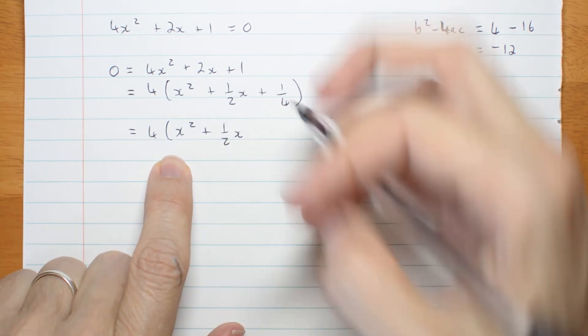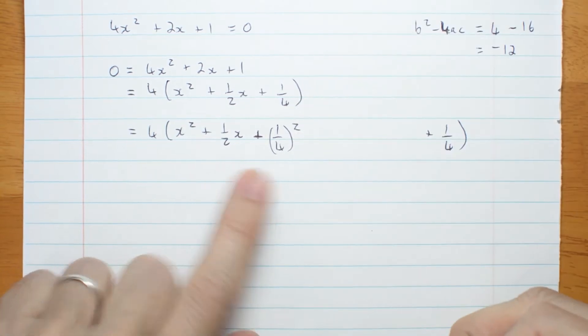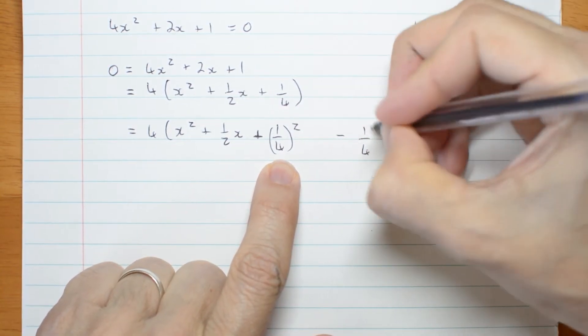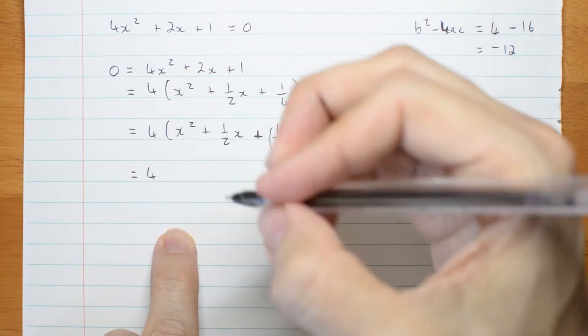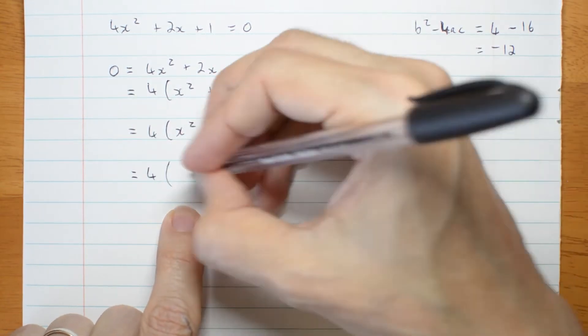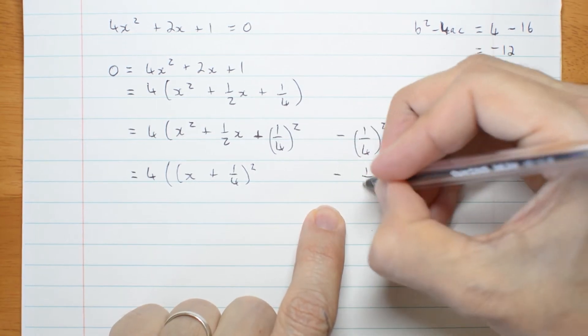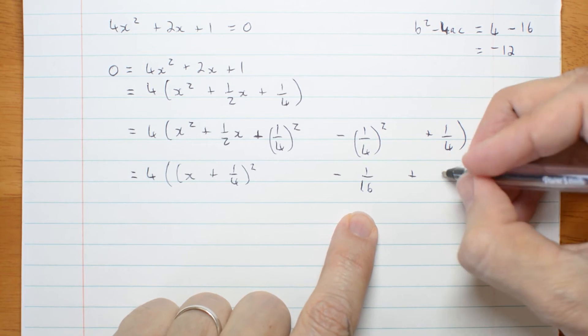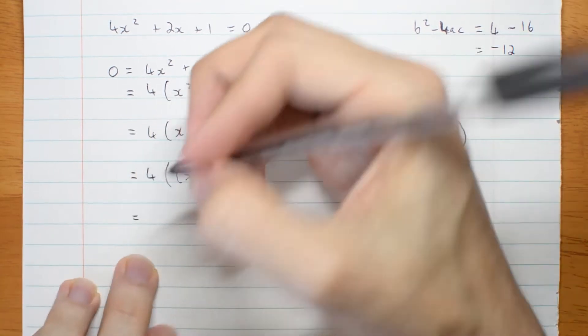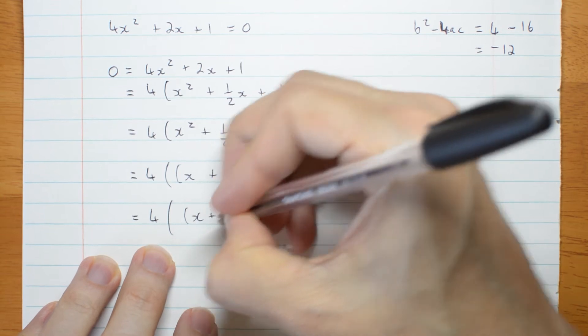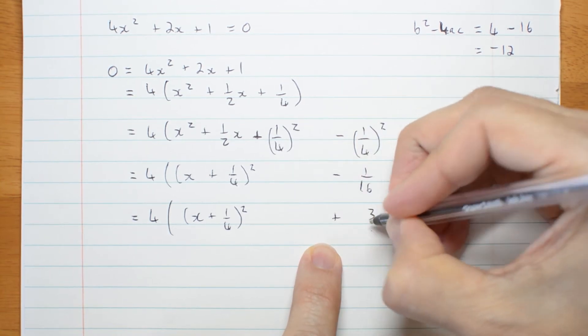If I'm completing the square, I have to always add half of this coefficient squared. If I'm adding a quarter squared, I better subtract a quarter squared. Leave the 4 out the front. And we're going to go this part is x plus a quarter squared. Now I have a sixteenth. I'm going to need this in sixteenths. Well, that's 4 sixteenths. So 4 times x plus a quarter squared minus 1 plus 4 is plus 3 sixteenths.